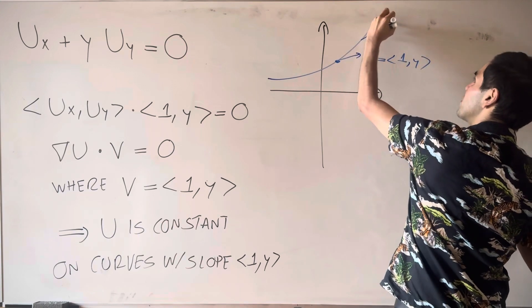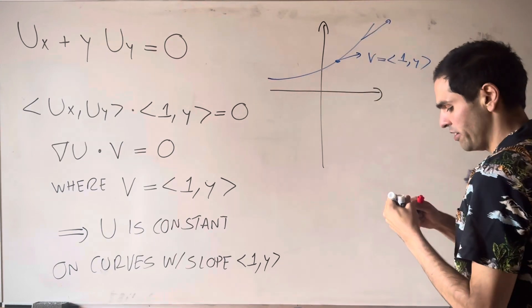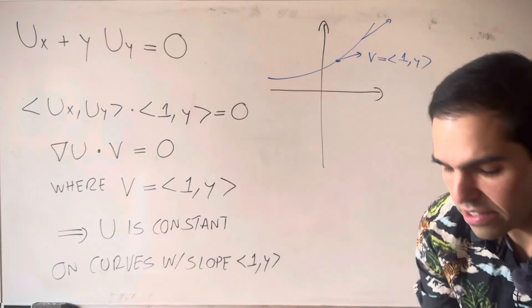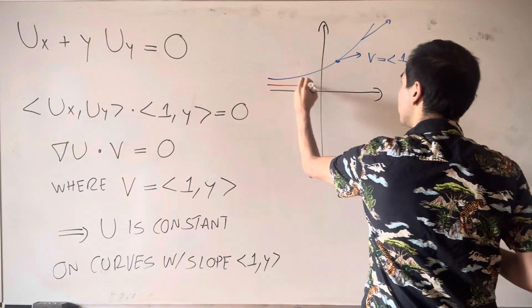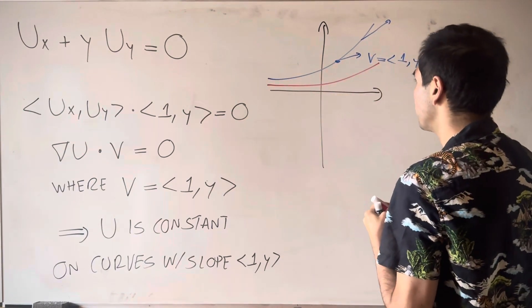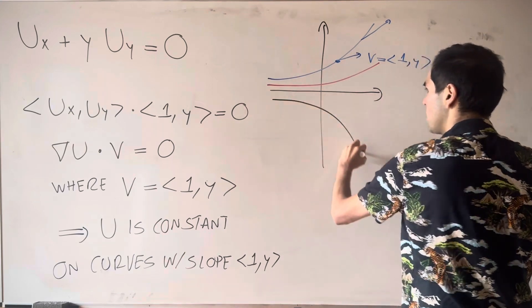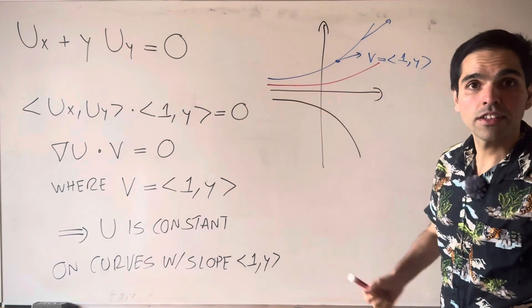You might have this curve with slope 1 comma y, which again, this slope just gets steeper and steeper the higher you go, or you could have this slope, or this curve, or maybe this curve.